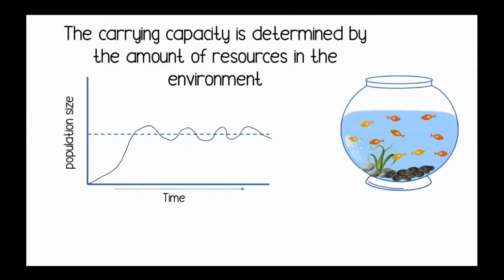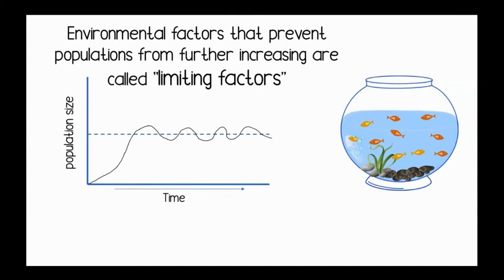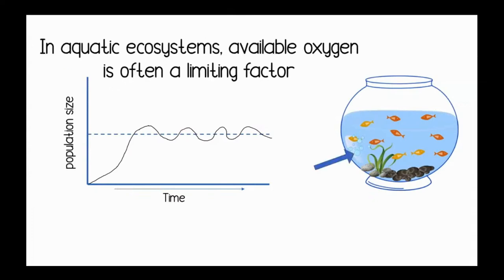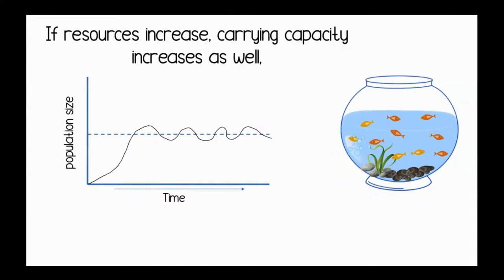The carrying capacity is determined by the amount of resources in the environment. Environmental factors that prevent populations from further increasing are called limiting factors. In aquatic ecosystems, available oxygen is often a limiting factor. If resources increase, carrying capacity increases as well.